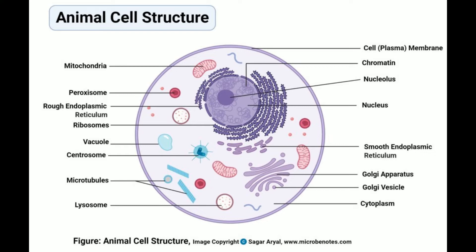Nucleoid Region: The nucleoid region of the cytoplasm in prokaryotic cells contains a single circular chromosome and small rings of extra-chromosomal DNA. The single circular chromosome is present as a single copy of genetic material, in contrast to the two copies of DNA in eukaryotes. The prokaryotic genome is also smaller in size than the eukaryotic genome. Plasmids are copied independently outside of the chromosomes and may carry some non-essential genes.